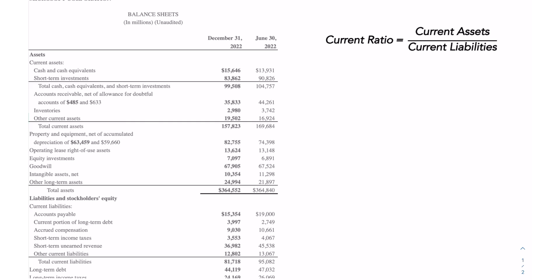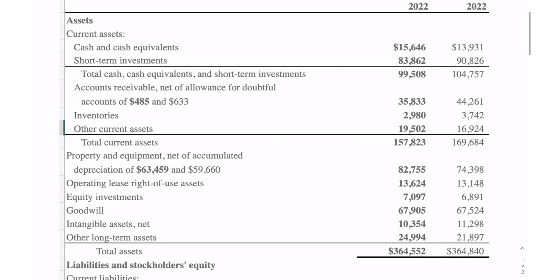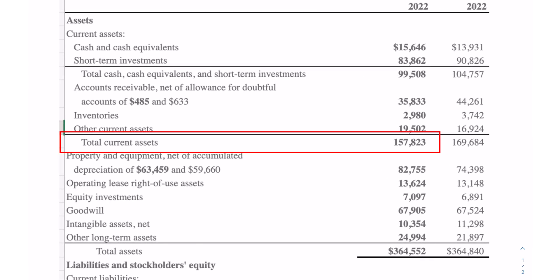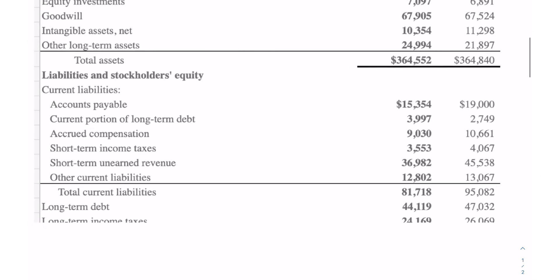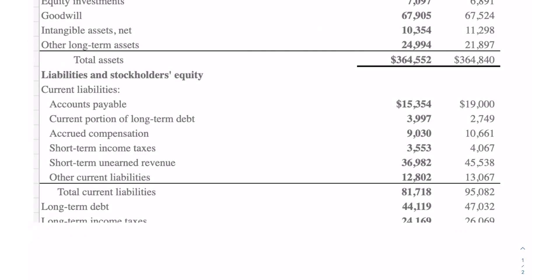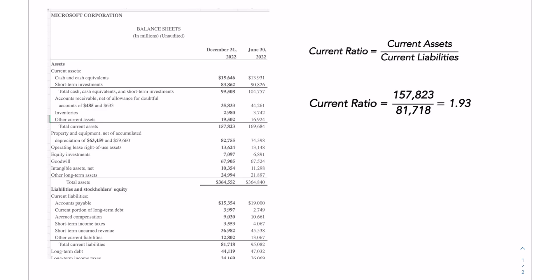In the case of Microsoft, the total current assets are $157,823. If we go a little bit further down in the balance sheet, we can see that the current liabilities are $81,723. So if we divide 157,823 by 81,718, we get a current ratio of 1.93, which indicates that using its current assets — all assets that can be liquidated within 12 months — Microsoft would be able to pay off almost two times its current liabilities.